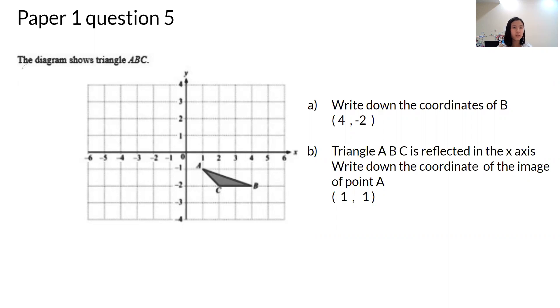Paper 1, question 5. The diagram shows triangle ABC.